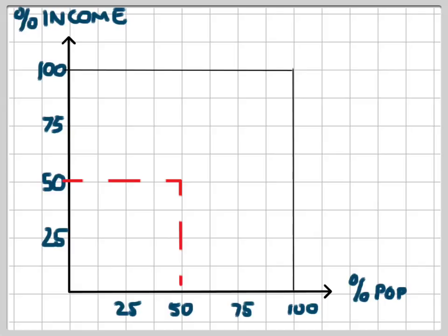If that were the case, half of the population, 50% of the population, would be in possession of 50% of the income. And we would see that this point would be on that line of total equality.